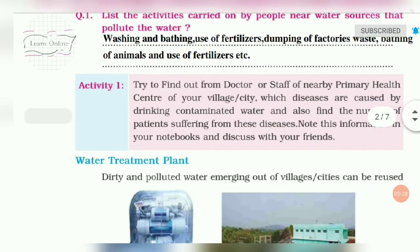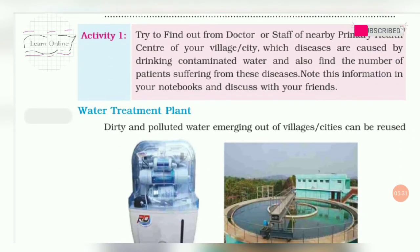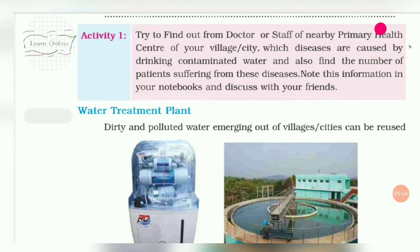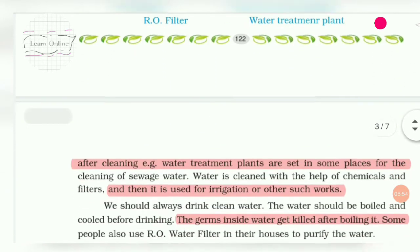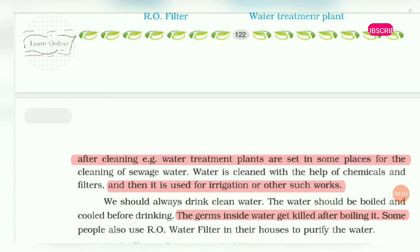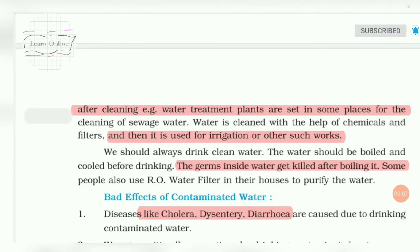Water treatment plant: our dirty and polluted water is cleaned through treatment plants. The demand for clean drinking water is increasing but resources are limited. Sewage water from villages and cities is reused by cleaning it through water treatment plants using chemicals and filters, and is then used for irrigation.